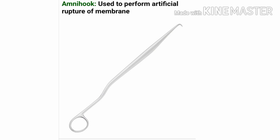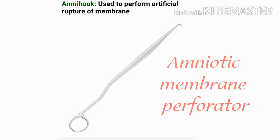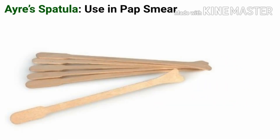Let's start the video with our first instrument, that is the amnihook. As you all are watching, this image is of the amnihook. It is used to perform artificial rupture of membrane, and you can also call it an amniotic membrane perforator.